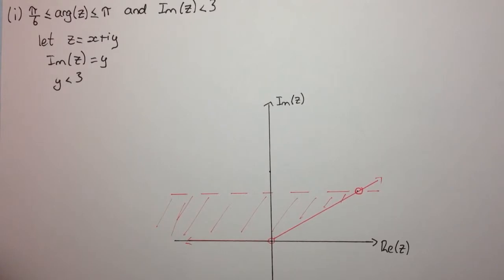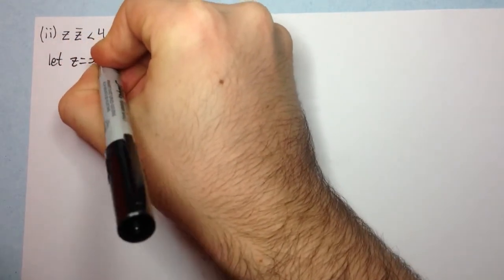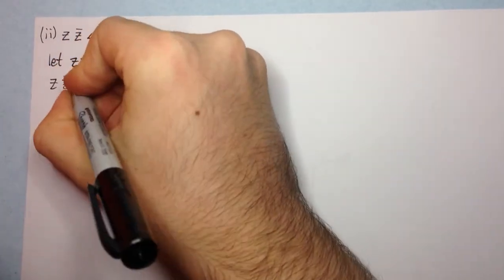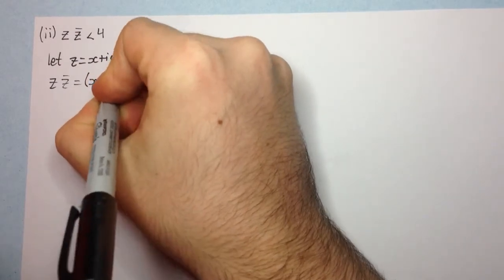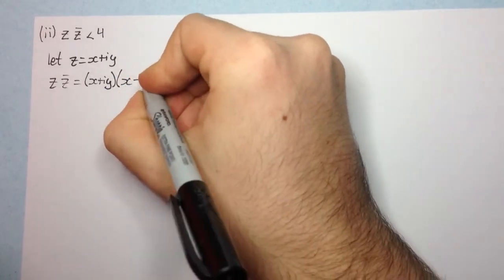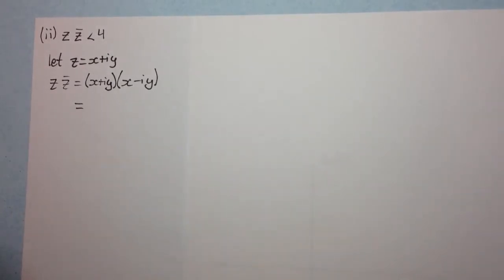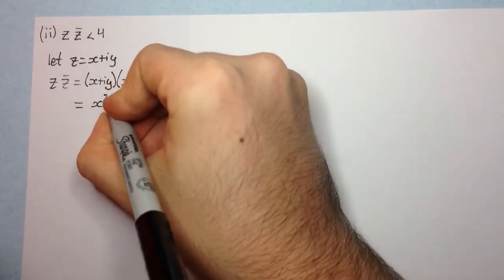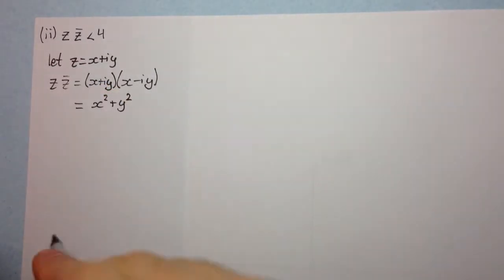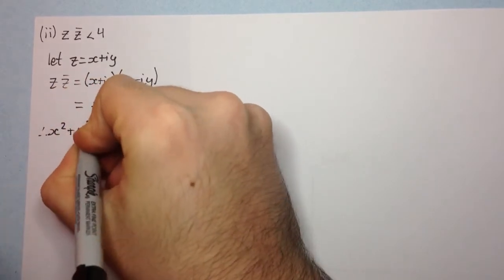Let's have a look at Part 2: z times z̄ is less than 4. Once again with these locus type problems, we let z equal x + iy. So z times z̄ is going to be (x + iy)(x − iy). We have a sum of two squares, because we're multiplying a complex number by its conjugate, so we get x² + y². Therefore our problem reduces to: x² + y² < 4.